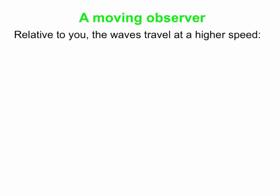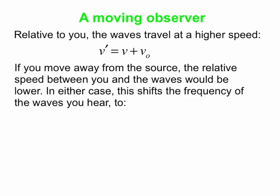So we've talked about the moving observer. Relative to you, the observer, the waves travel at a higher speed if you're moving toward the source, or a lower speed if you're moving away. The effective velocity v′ is v — the speed of the waves — plus v of the observer when moving toward, or v minus v_o when moving away.